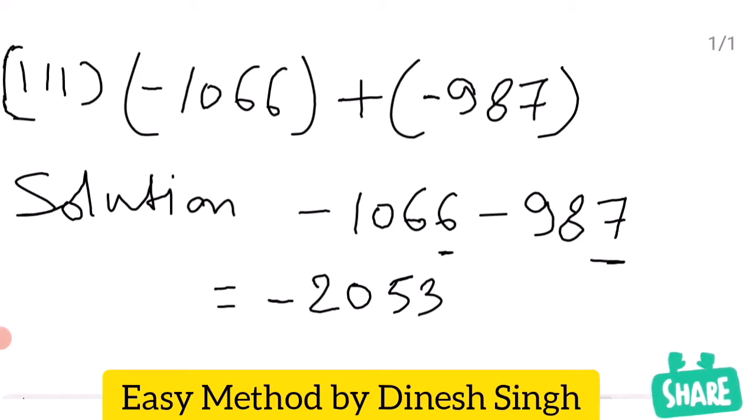Minus 2053. Answer: it is a negative integer. Next is additive identity.